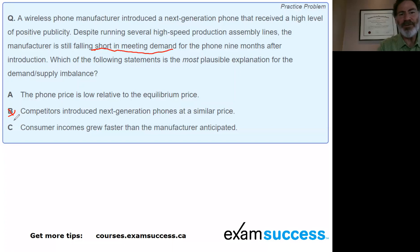We've got: the phone price is low relative to the equilibrium price, or consumer incomes grew faster than the manufacturer anticipated. Now a lot of people might jump at choice C, but don't go there. Here's the CFA-ism.